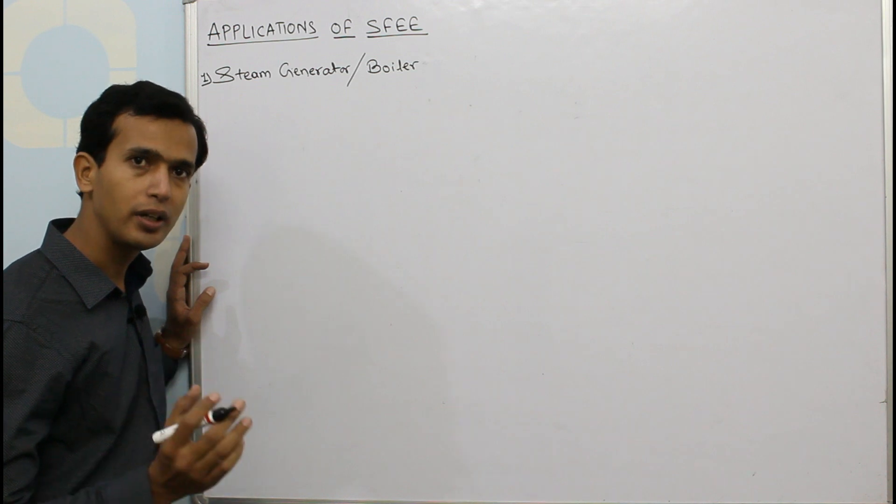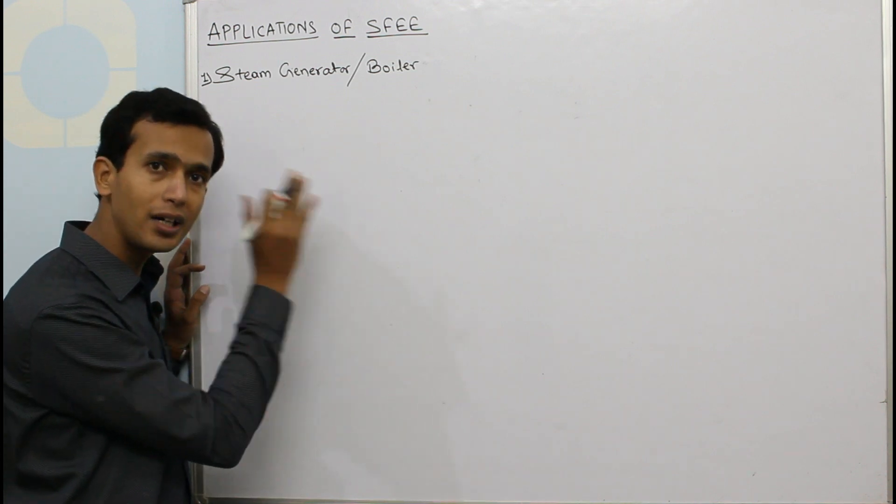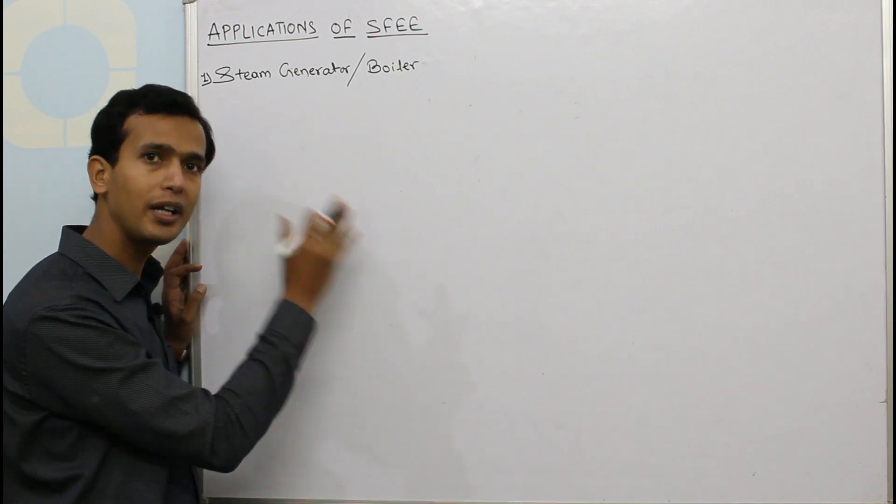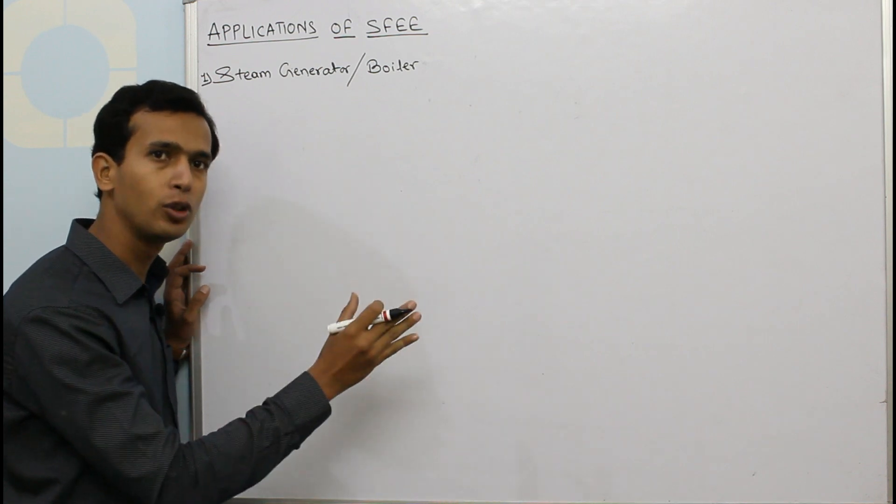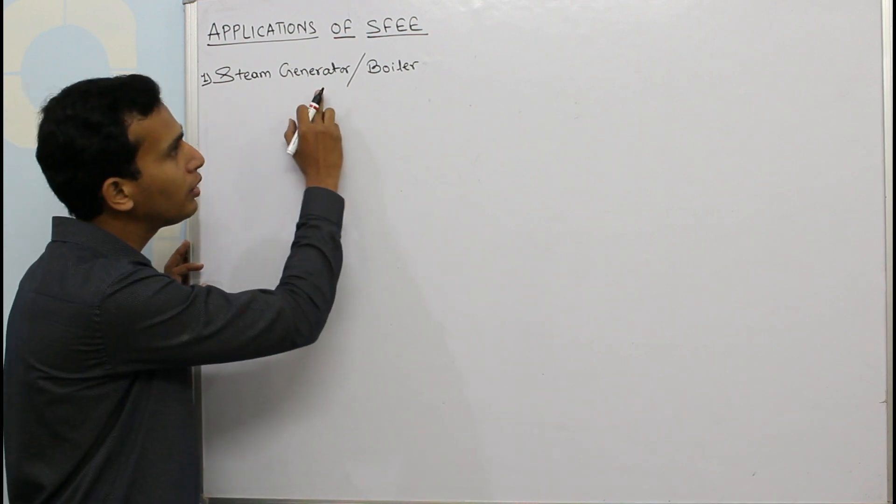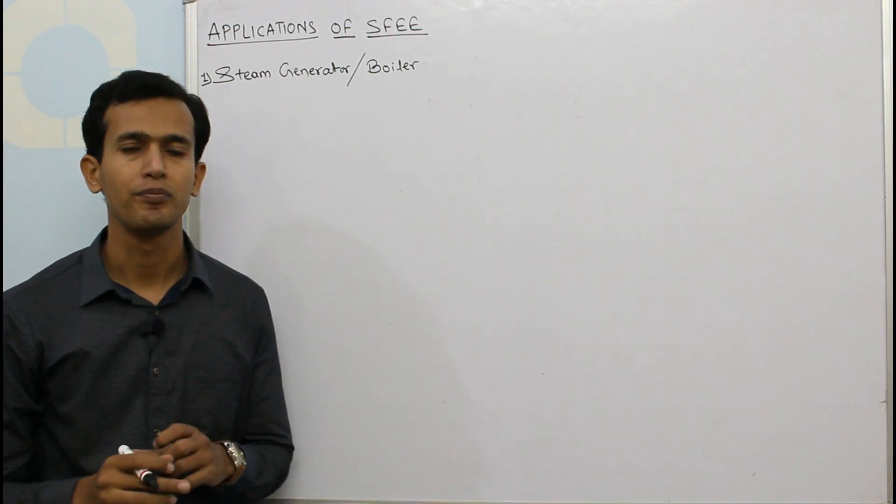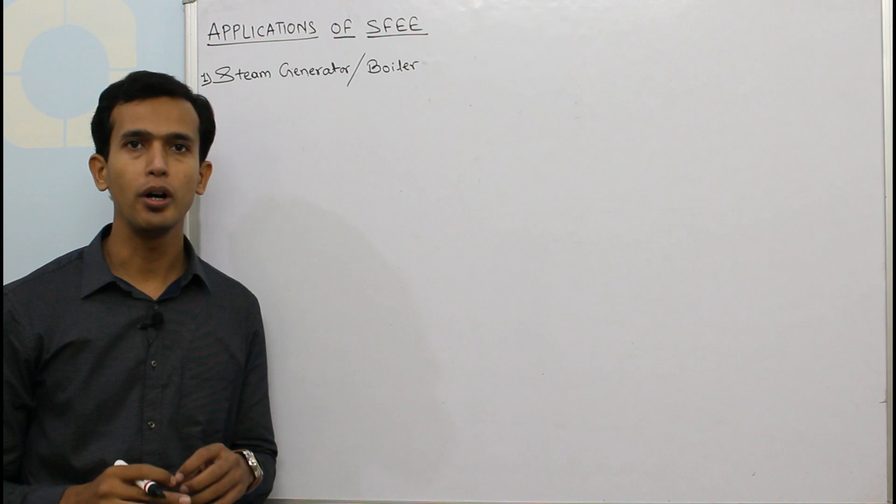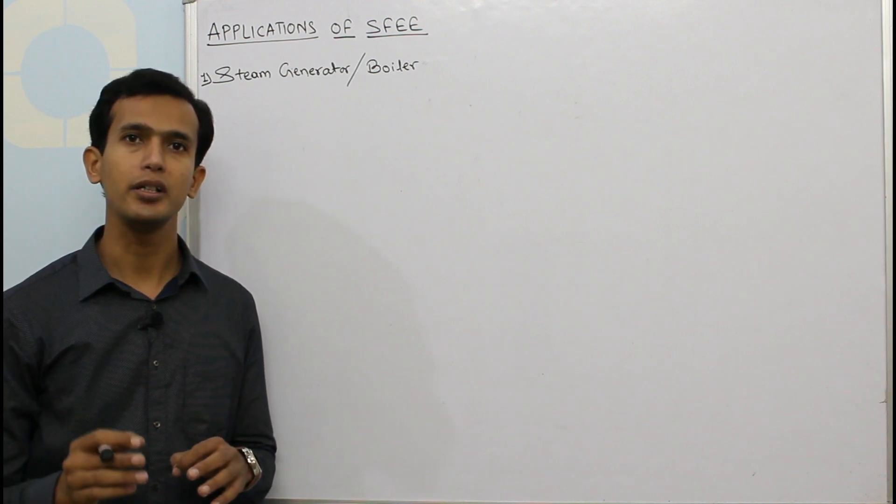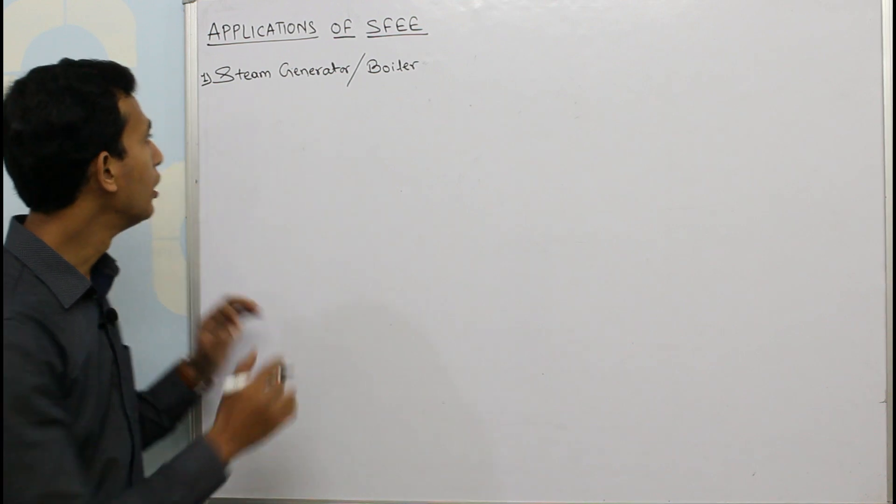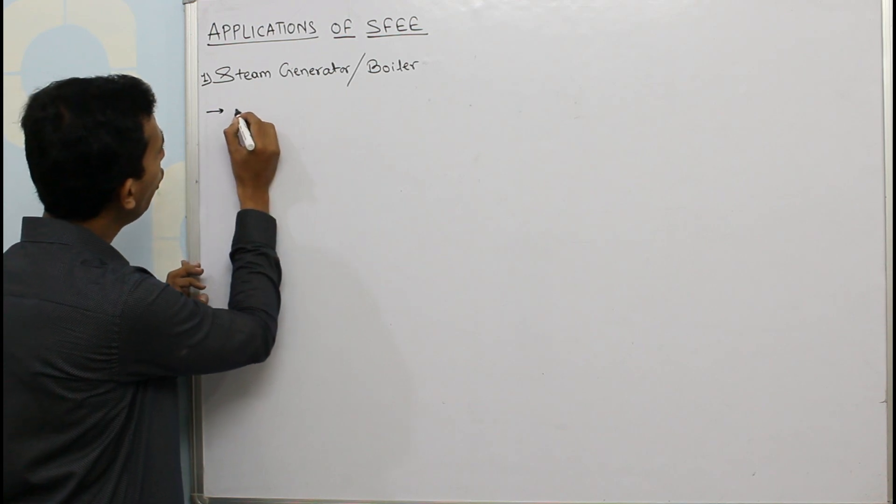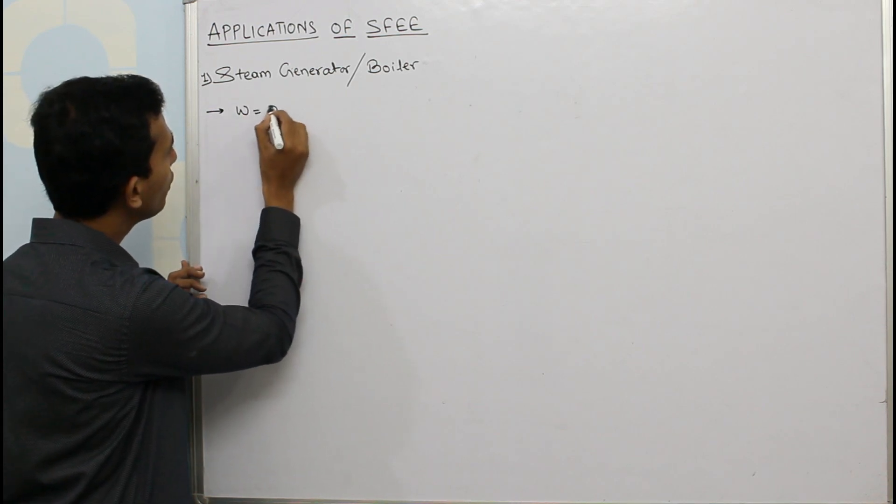So as to understand the application of that steady flow energy equation to various applications, one of those is a steam generator which is also called a boiler. Now we all know what is the function of a boiler: it converts the feed water into dry and saturated steam. So there is no work interaction in case of steam generator.